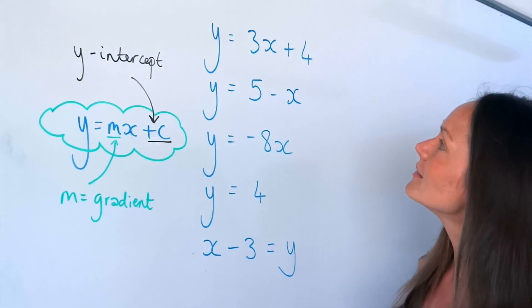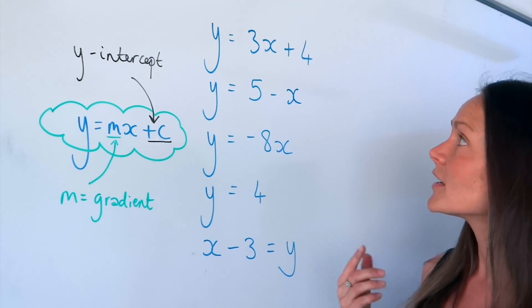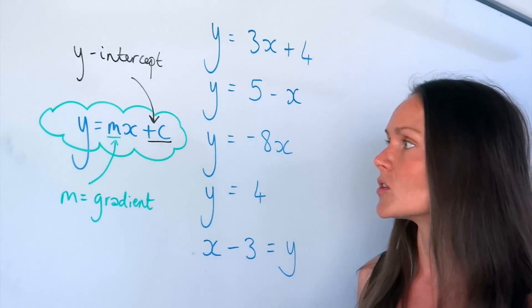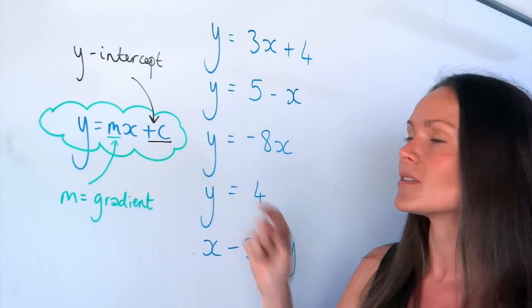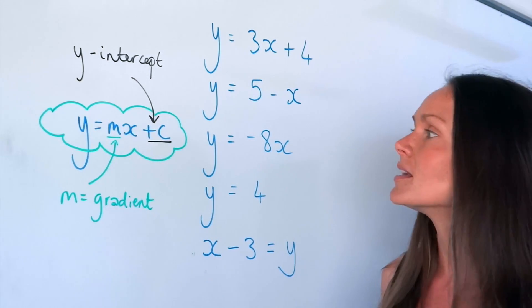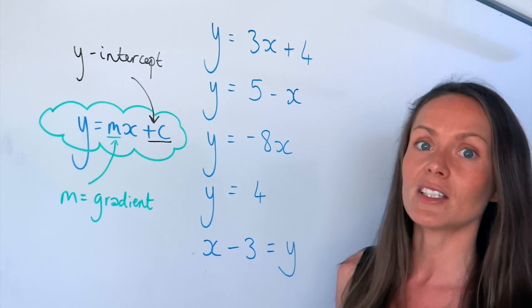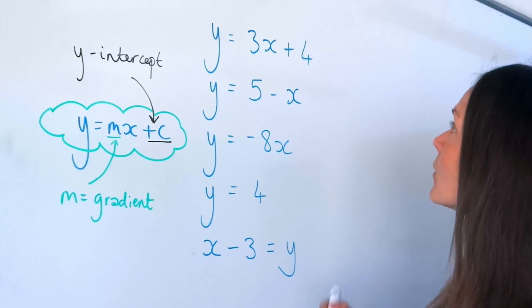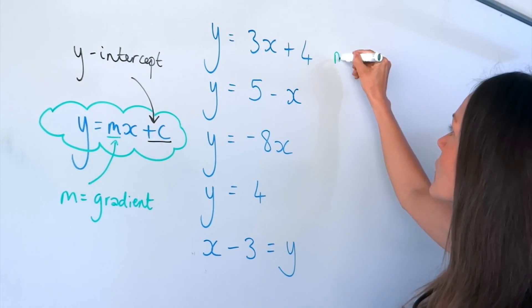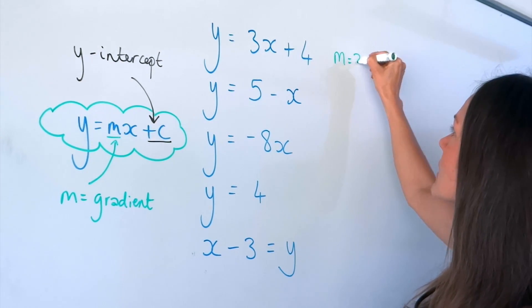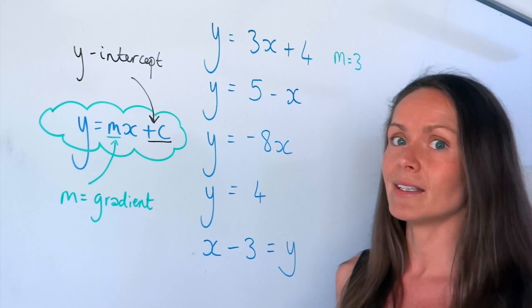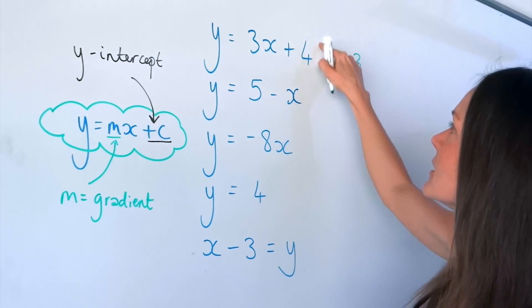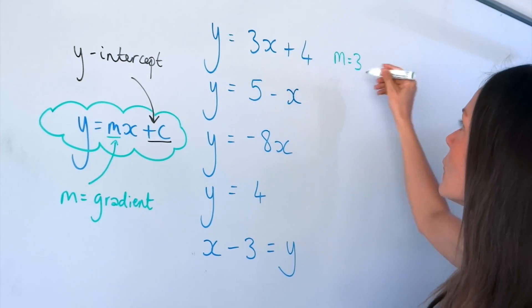In this first example, the equation is already organised in the right order: y equals mx plus c. So m, the gradient, is just the number in front of the x. In this one, m, the gradient, is 3. And c, the y-intercept, is just the number by itself, so in this one it's positive 4.